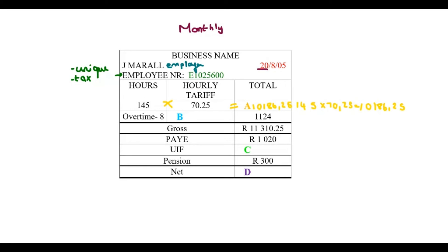Next is the overtime hours. This guy worked 8 hours. And we do not know how much he was paid per hour for overtime. But we do know that in the end, he was paid a total of 1,000 rand for his overtime.